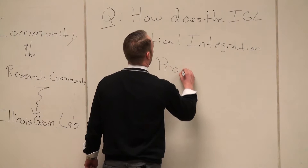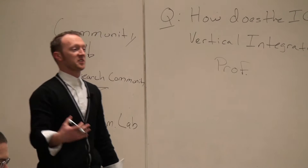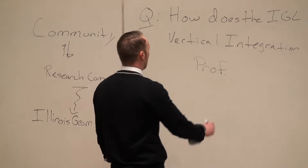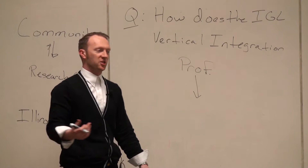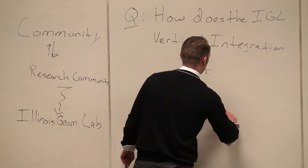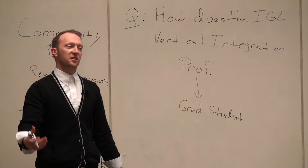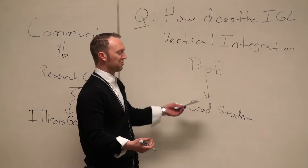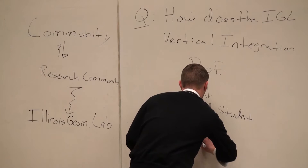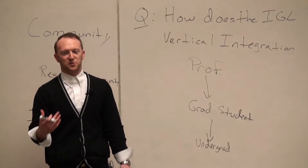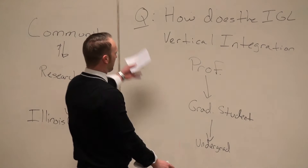The basic picture works like this. We have a professor who has some sort of research question or visualization — something they want to explore. What they then do is take that idea and try to break it up into chunks that would be accessible for a graduate student. These graduate students become our team leaders. They'll lead a team of undergrads, and they'll parcel out the tasks to undergraduates so the undergraduates can work on tasks that are accessible to them.